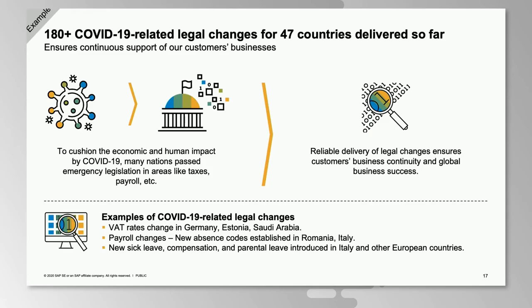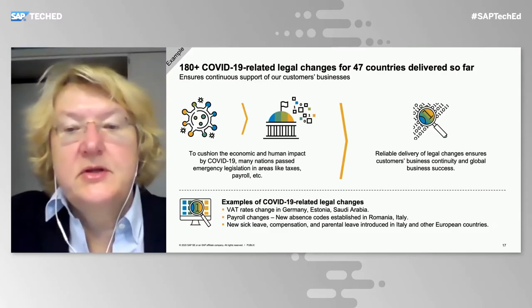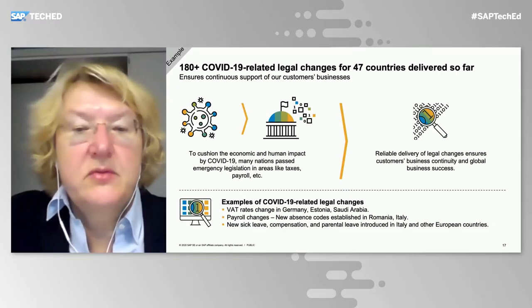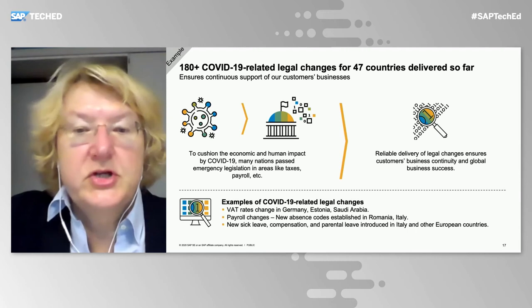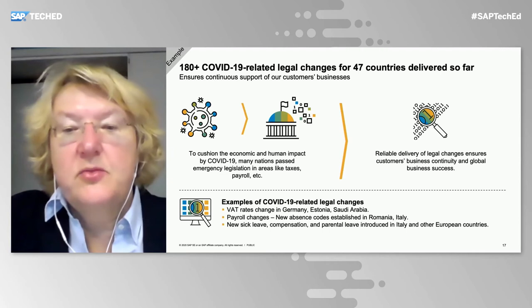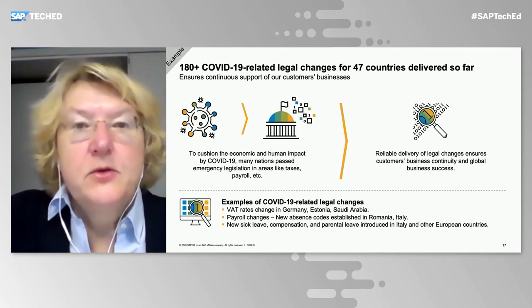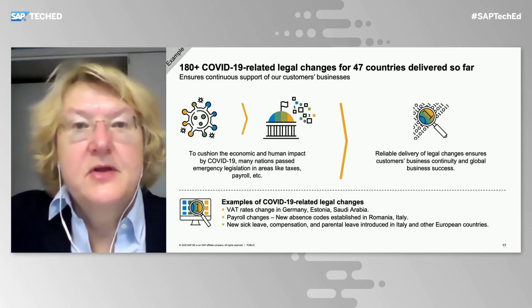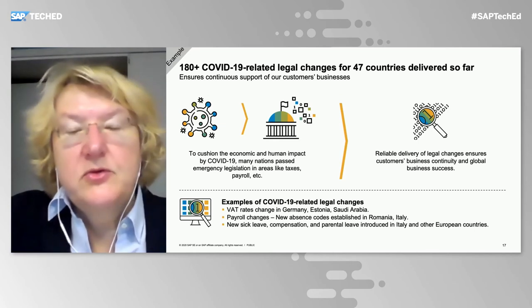Some examples include tax changes in Germany, Estonia, and Saudi Arabia. There were payroll changes as well — new absence codes in some countries, new sick leaves, new compensation, new parental leave, and new ways to report on people trained. These are examples that came with COVID-19, where we are keen to implement changes as timely as possible so that enterprises and customers are enabled to run their business successfully.